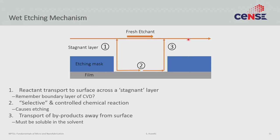Those of you who remember the CVD lecture would see the parallels. We discussed a very similar looking reaction mechanism when doing deposition, and the reason for the stagnant layer is essentially the same. In any system where there is a source and a sink, there is always a problem of how to transport the material. In the absence of active flow, material transports through diffusion through the stagnant layer, where there is an accumulation of byproducts but very low concentration of the fresh etchant.